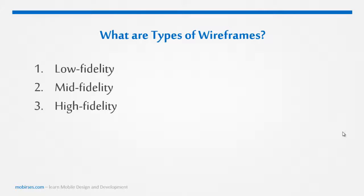What are the types of wireframes? Well, there are three: low fidelity, mid fidelity, and high fidelity. Each designer has their preferred method of creating wireframes, and some will go through all three before they move on to the real design. So let's take a look at them one by one.